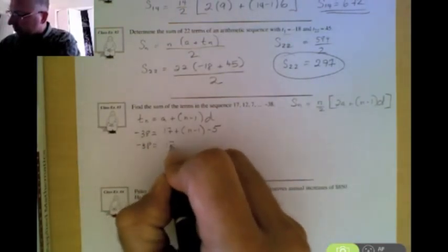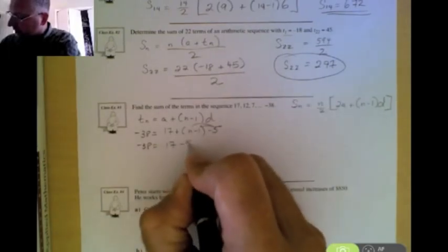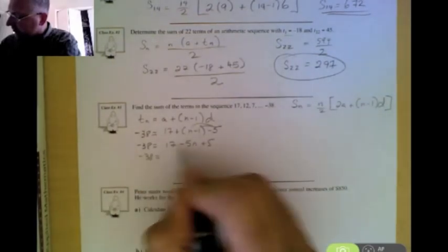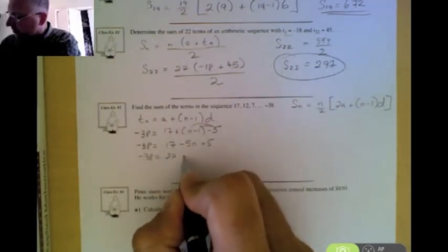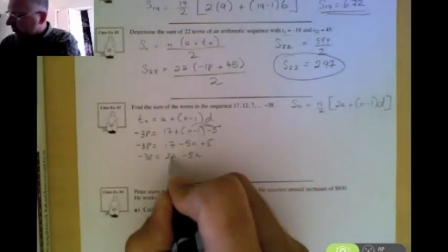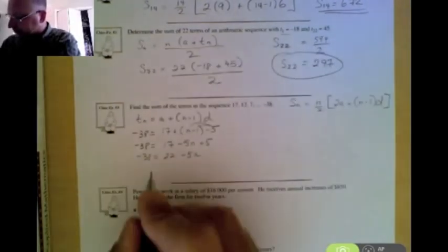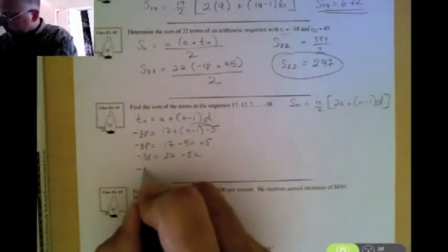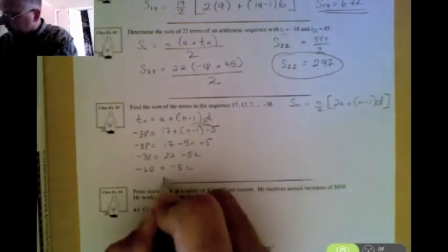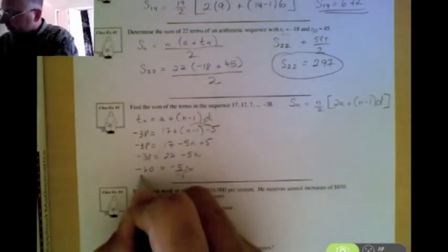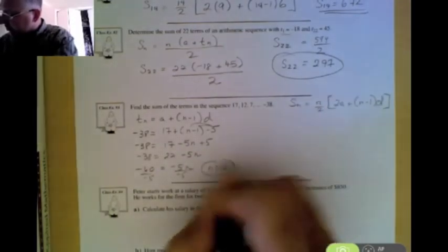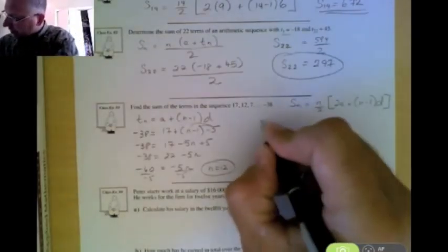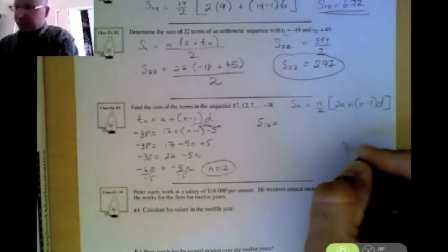So if we start solving this, if we distribute the negative 5, we get negative 5n plus 5. We get negative 38 equals 17 plus 5 is 22 minus 5n. So we need to subtract 22 from each side. Well, if we subtract 22 from each side, we're going to end up with negative 60 equals negative 5n. And when you divide each side by negative 5, you're going to find out that the number of terms in this particular sequence is 12. So that means we now know we're going to find the sum of the first 12 terms.